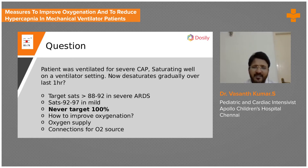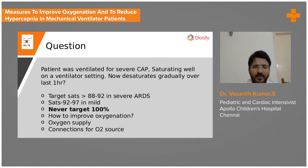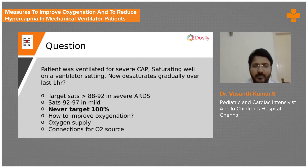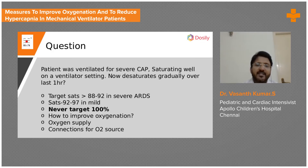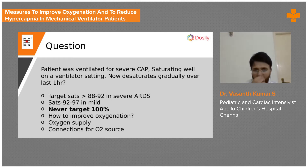Always remember: your target oxygen levels are never 100%. We hate to see 100 on the monitor screen — it should be just about 92 to 94. In ARDS, the more severe the problem, the lower the target. In severe ARDS it is 88 to 92, and in mild ARDS it is 92 to 97. Never target 100% saturation.